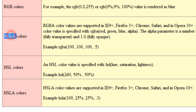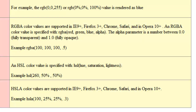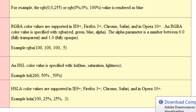As for the RGBA and HSLA color models — which render colors fully transparent, fully opaque, or semi-transparent — these are supported in IE 9+, Firefox 3+, Chrome, Safari, and Opera 10+ only. If you're working with older browsers, the transparency may not work, so it's best to use modern browsers.